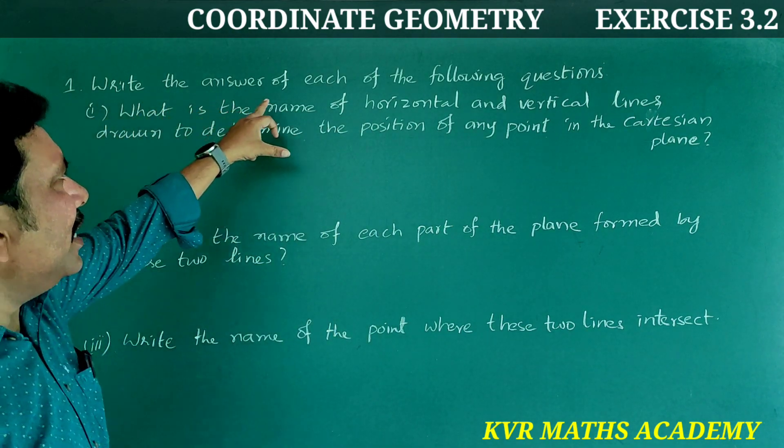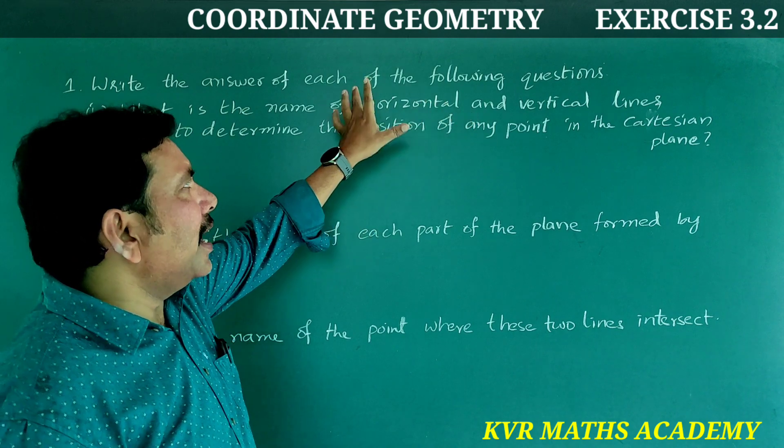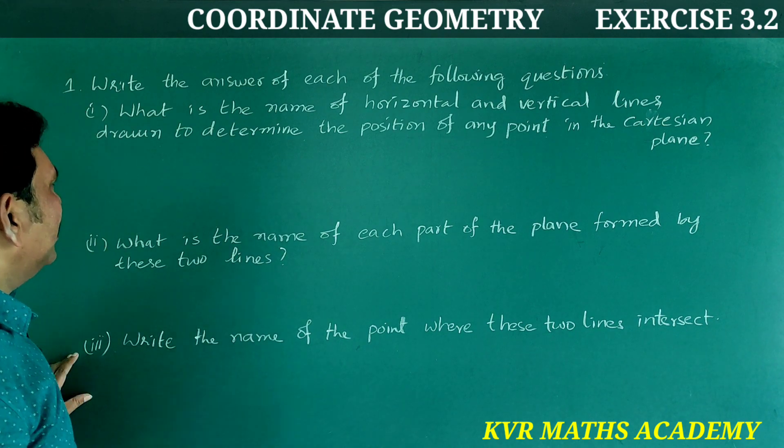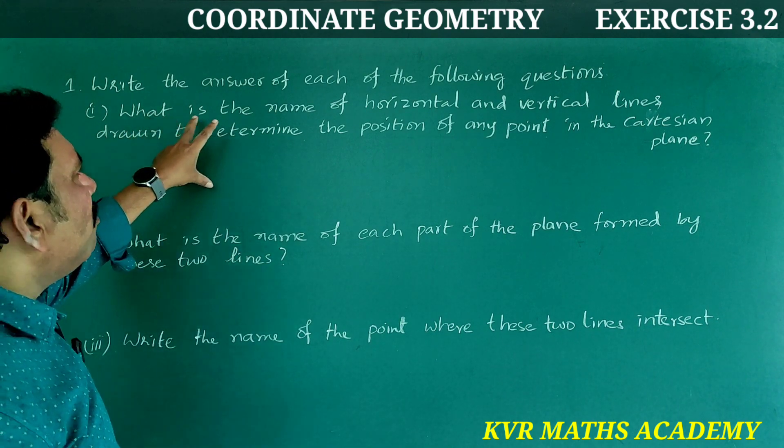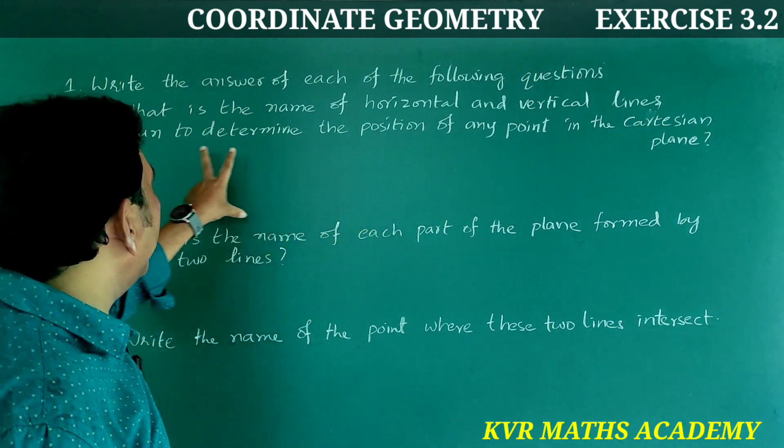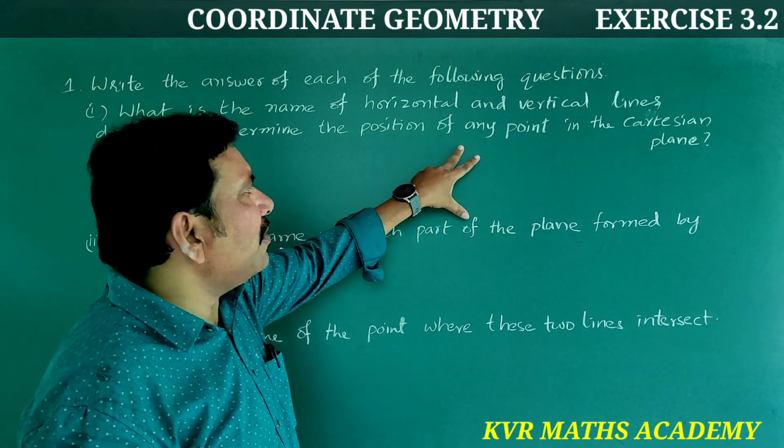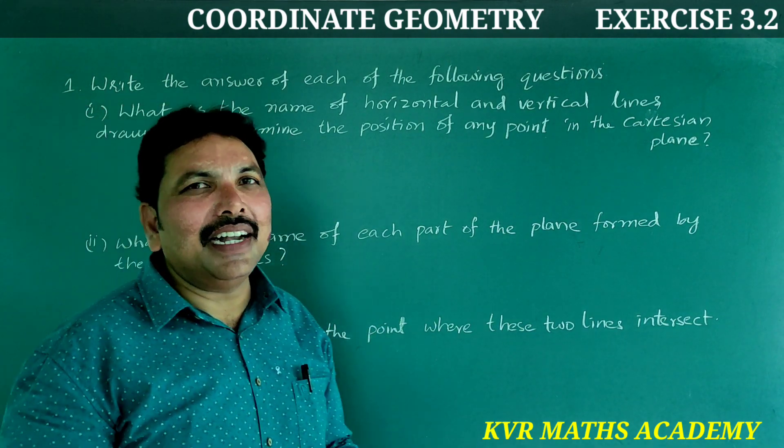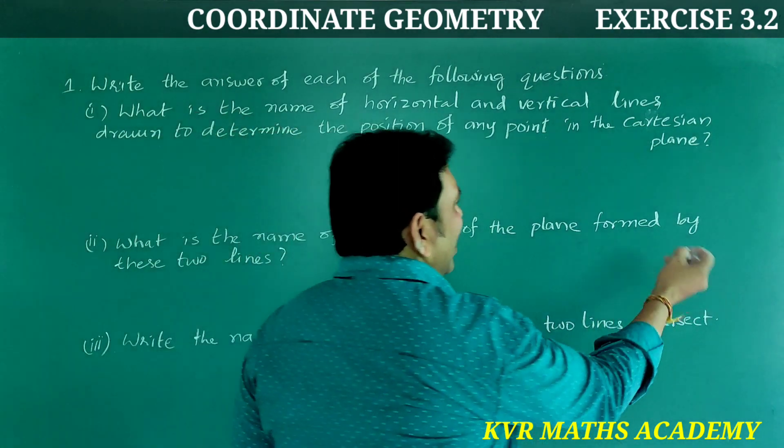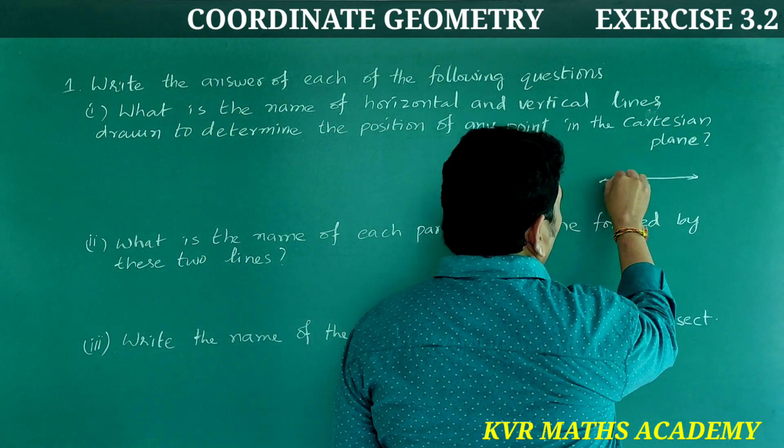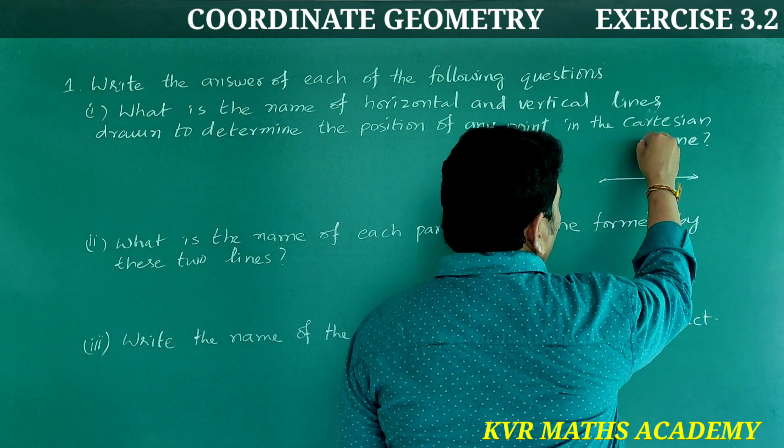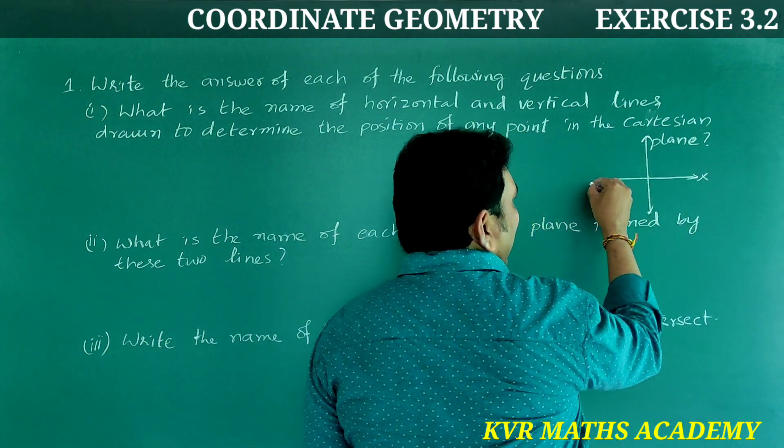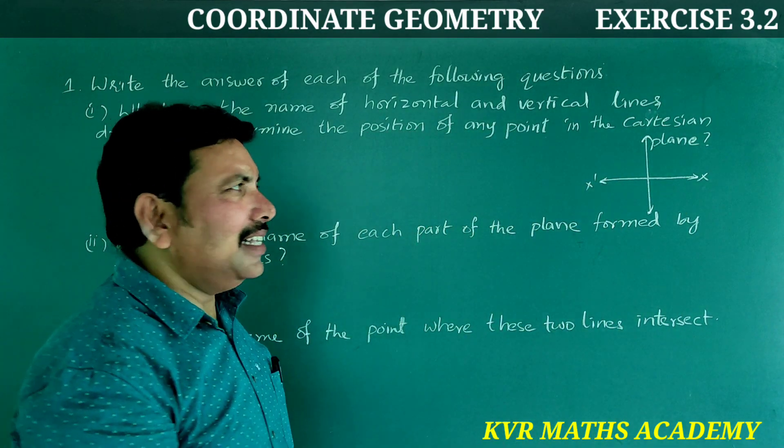Let's go through this. See, this is the first question: Write the answer of each of the following questions. First question: What is the name of the horizontal and vertical lines drawn to determine the position of any point in the Cartesian plane? You can mark a Cartesian plane - horizontal line and vertical line. Horizontal line is called x-axis.